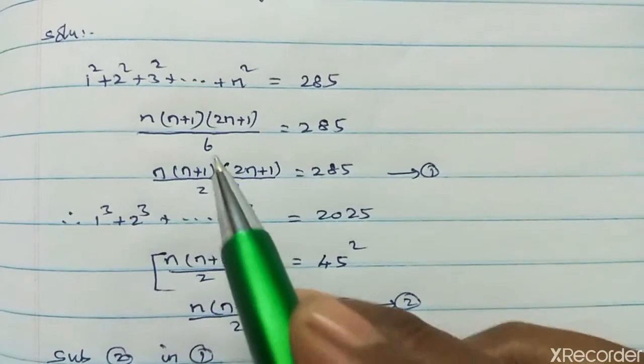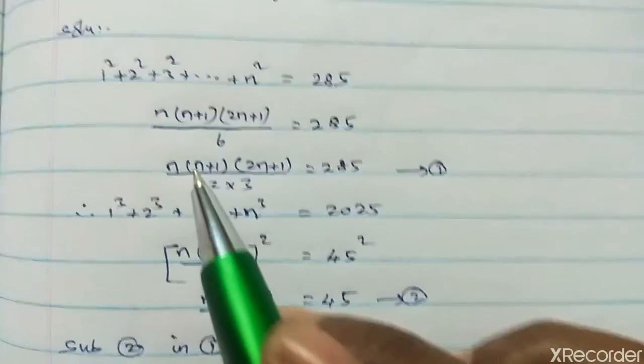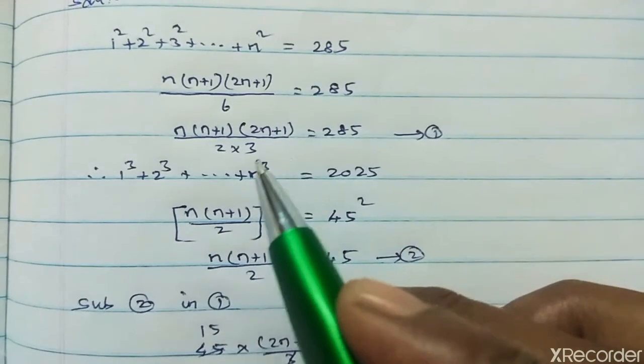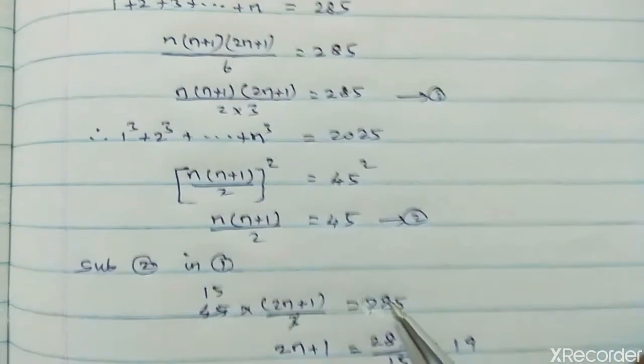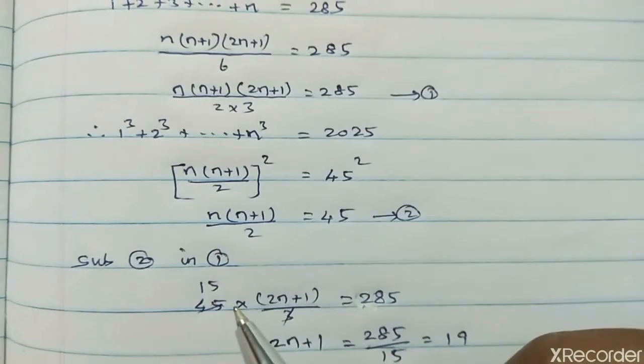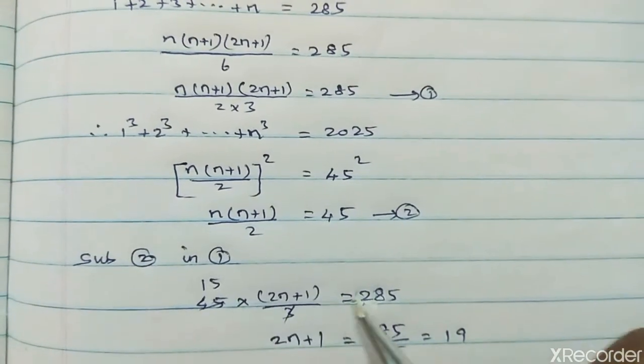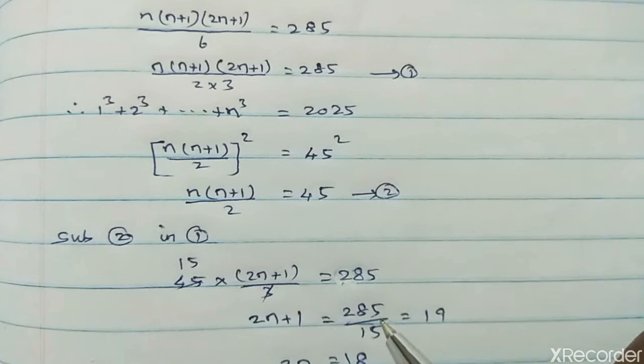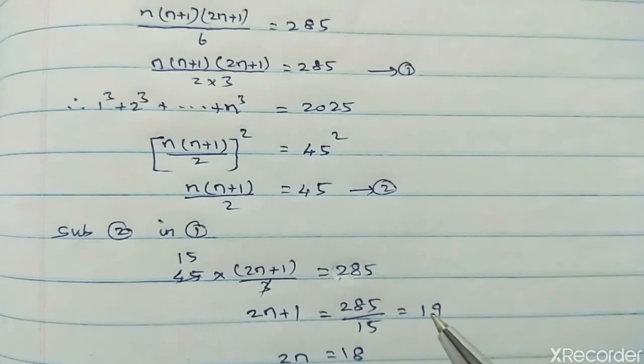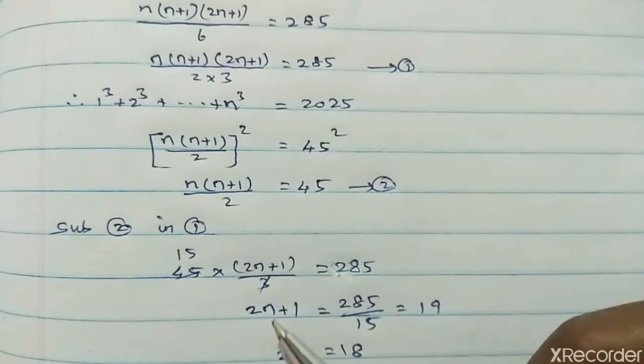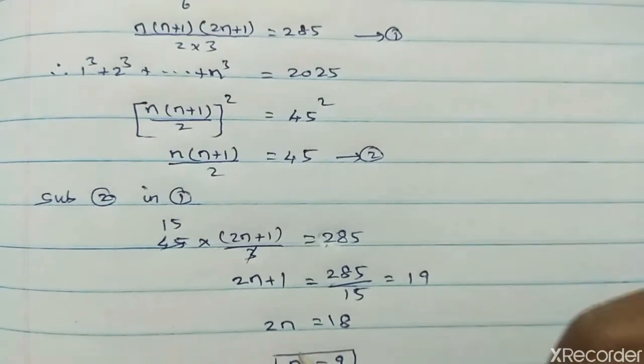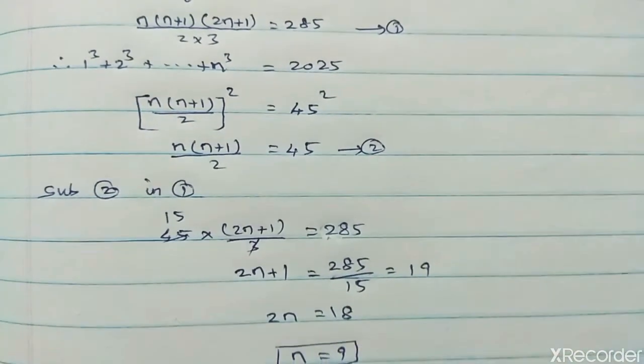n into n plus 1 divided by 2 equal to 45. Apply: 45 into 2n plus 1 divided by 3 equal to 285. 2n plus 1 equal to 285 divided by 15. Cancel: 19 times. 2n equal to 18, so n equal to 9. Thank you.